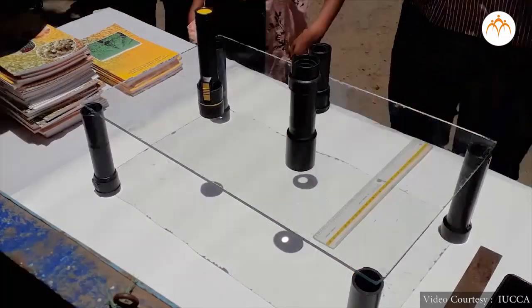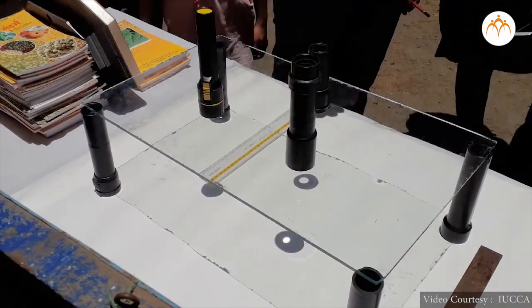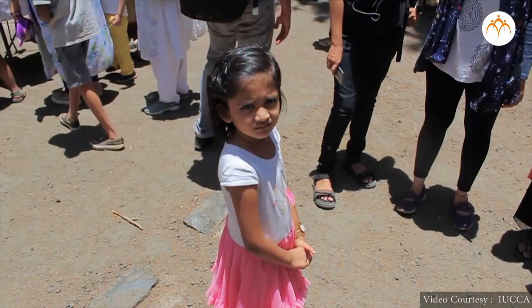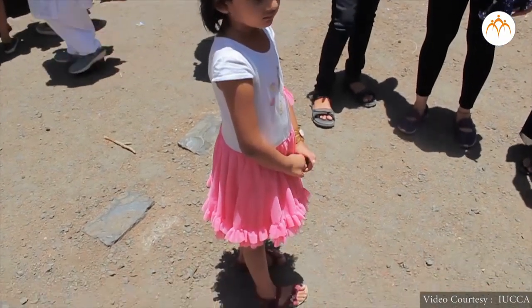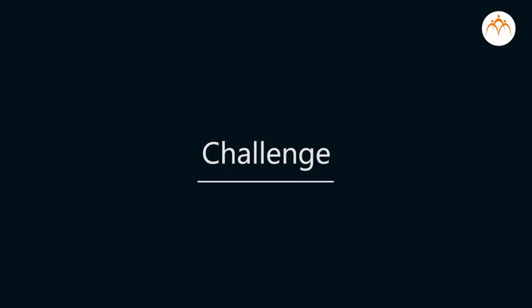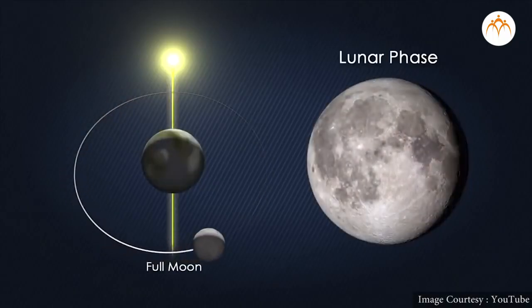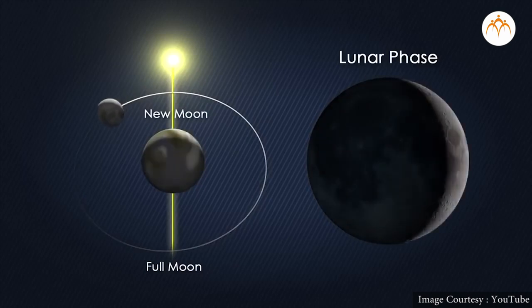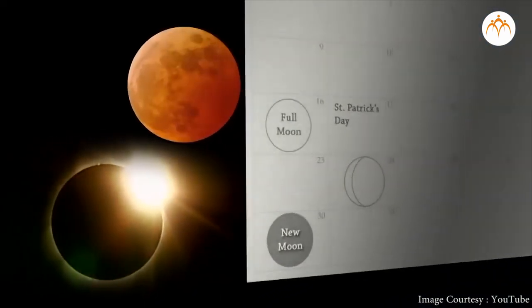Zero shadow day is another event which occurs twice a year in certain parts of the earth. Zero shadow is a phenomenon when the sun is exactly overhead and the shadows of symmetrical and vertical objects vanish. Challenge: If the moon orbits the earth once a month, why doesn't an eclipse happen every month?